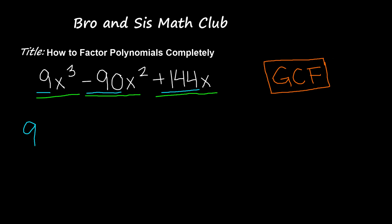But then we also see variables — we see x's — and there is an x in each one of the terms in this trinomial, so it's going to be considered part of the greatest common factor. There are different exponents for each variable: we have x cubed, x squared, and x all by itself. When a variable has no exponent written, it always has an exponent of 1.